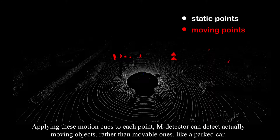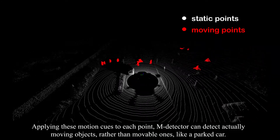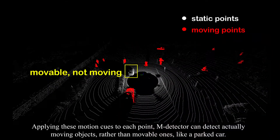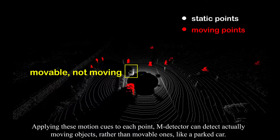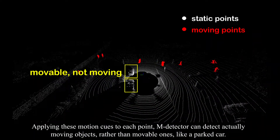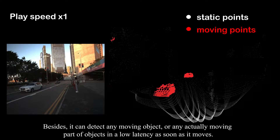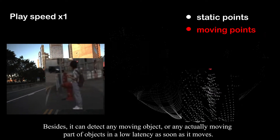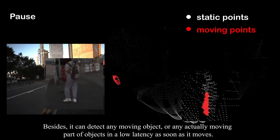Applying these motion cues to each point, MDetector can detect actually moving objects, rather than movable ones like a parked car. Besides, it can detect any moving object, or any actually moving part of objects, in low-latency as soon as it moves.